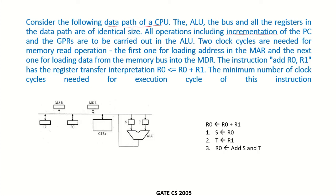The ALU, the bus, and all the registers in the data path are of identical size. All operations including incrementation of the PC and the GPRs are to be carried out in the ALU.